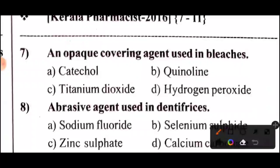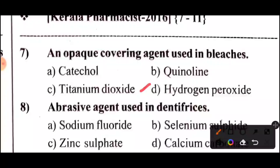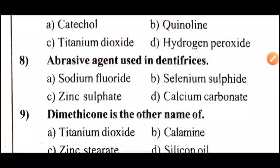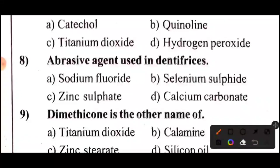Question 7: An opaque covering agent used in bleaches — Option C — Titanium Dioxide. An opaque covering agent used in dentifrices is also discussed.